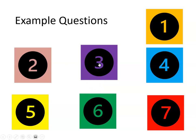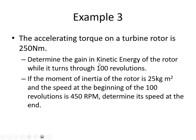Example 3: The accelerating torque of a turbine rotor is 250 Nm. We are asked to determine the gain in kinetic energy of the rotor while it turns through 100 revolutions. If the moment of inertia of the rotor is 25 kg·m² and the speed at the beginning of the 100 revolutions is 450 RPM, determine the speed at the end.